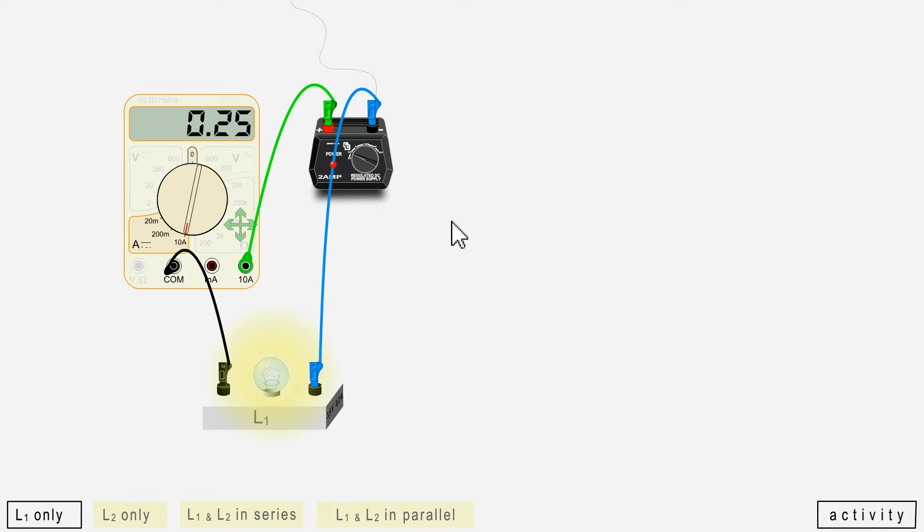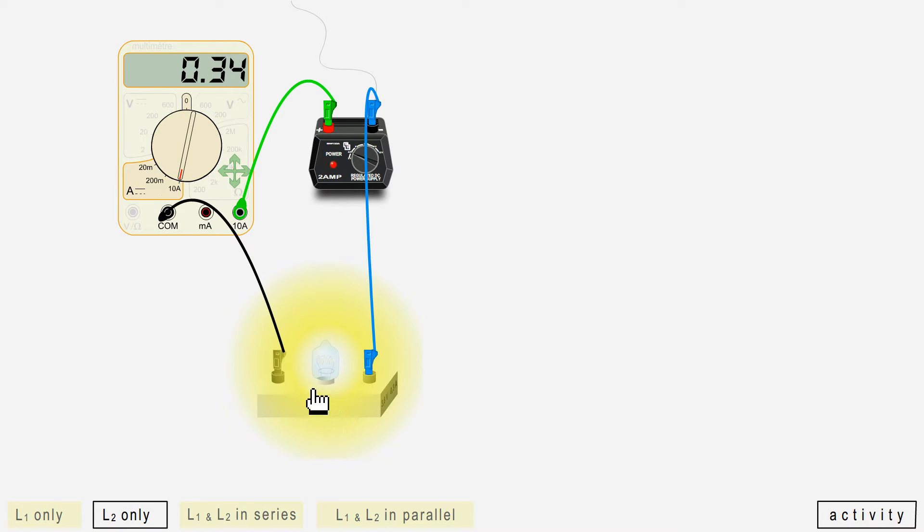This measure is not requested in the activity but it can be interesting. We will come back to this later. When it is alone, L2 is crossed by a current of 0.34 amperes of intensity. It is indeed amps which are displayed since the range here is in amps.